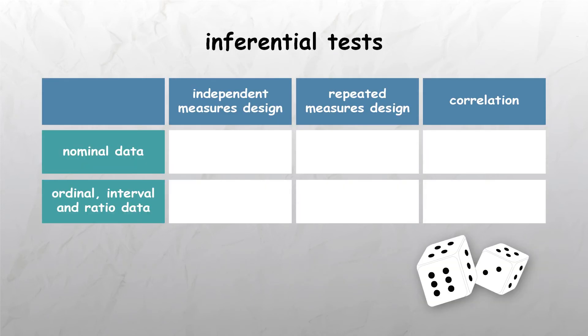So, what are the names of the inferential tests, and what data are they used for? There are five types of inferential tests, which are called the chi-square test, the binomial sign test, the Mann-Whitney-U test, the Wilcoxon's signed ranks test, and Spearman's rho, also sometimes known as Spearman's rank correlation coefficient.